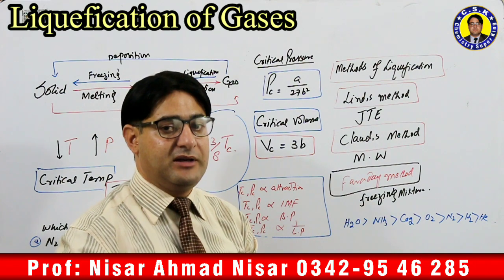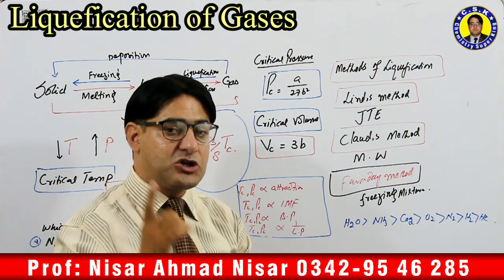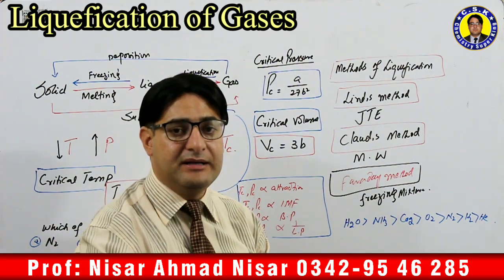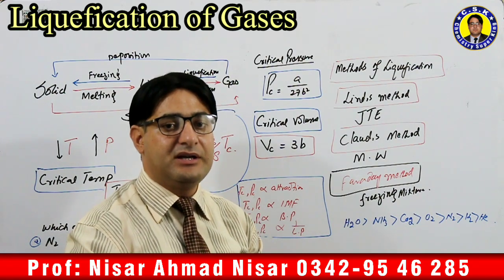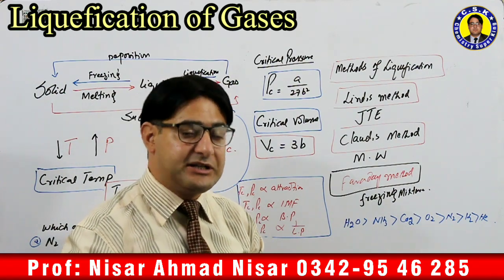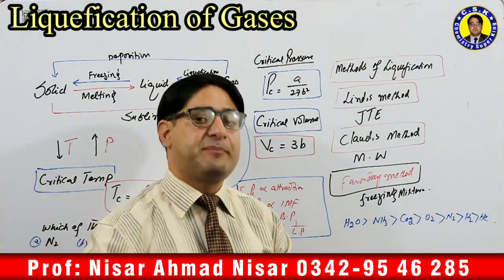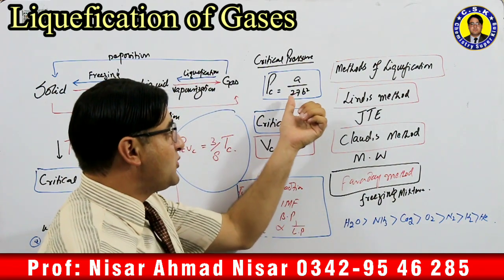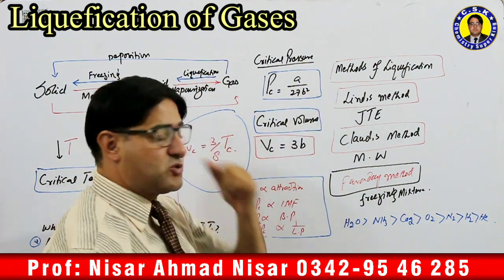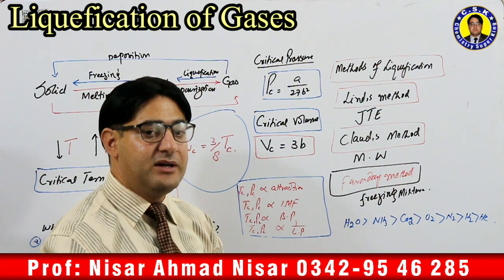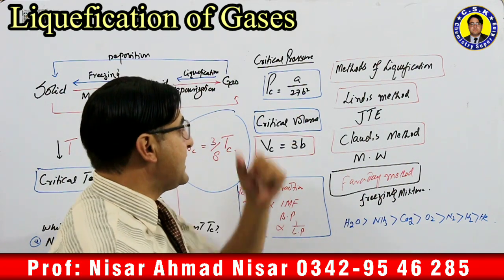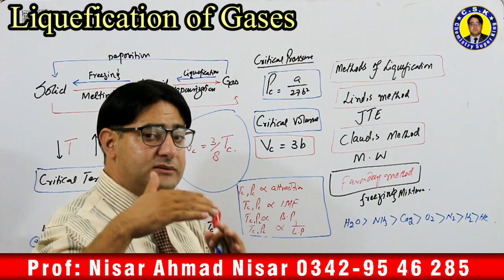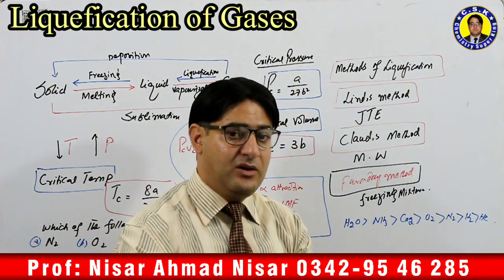Now let's talk about critical pressure — the pressure by which a gas can be liquefied at critical temperature. This is called critical pressure, represented as Pc. Mathematically, Pc equals a divided by 27b², where 'a' and 'b' are van der Waals constants.